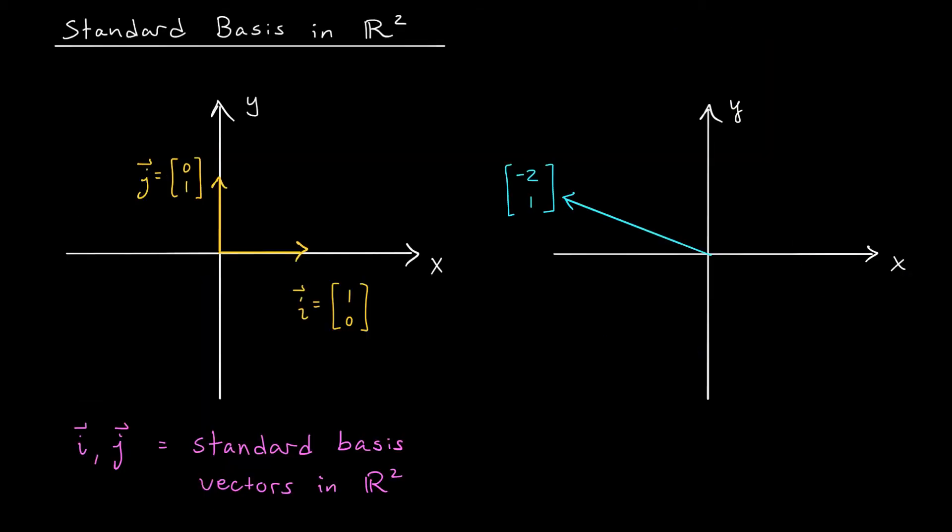Once we've defined addition and scalar multiplication, we can start combining vectors in all sorts of ways. For example, if you have vectors V and W, you can consider combinations like 2V plus 3W, or V minus 4W. The possibilities are endless.